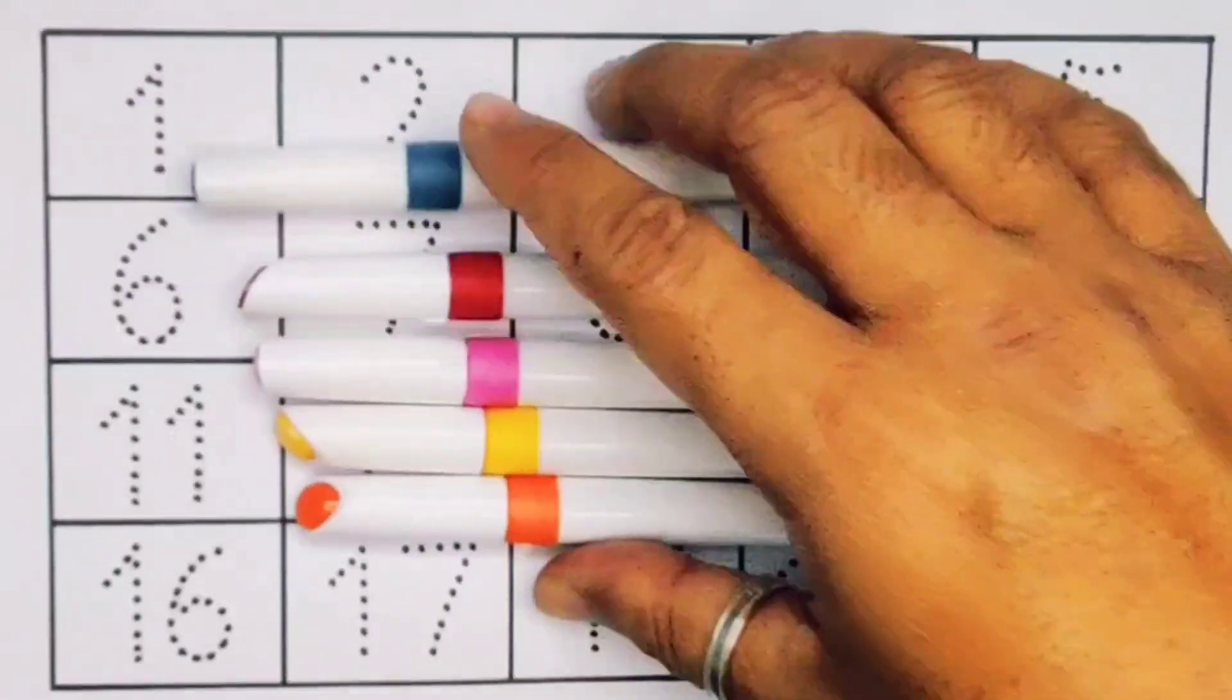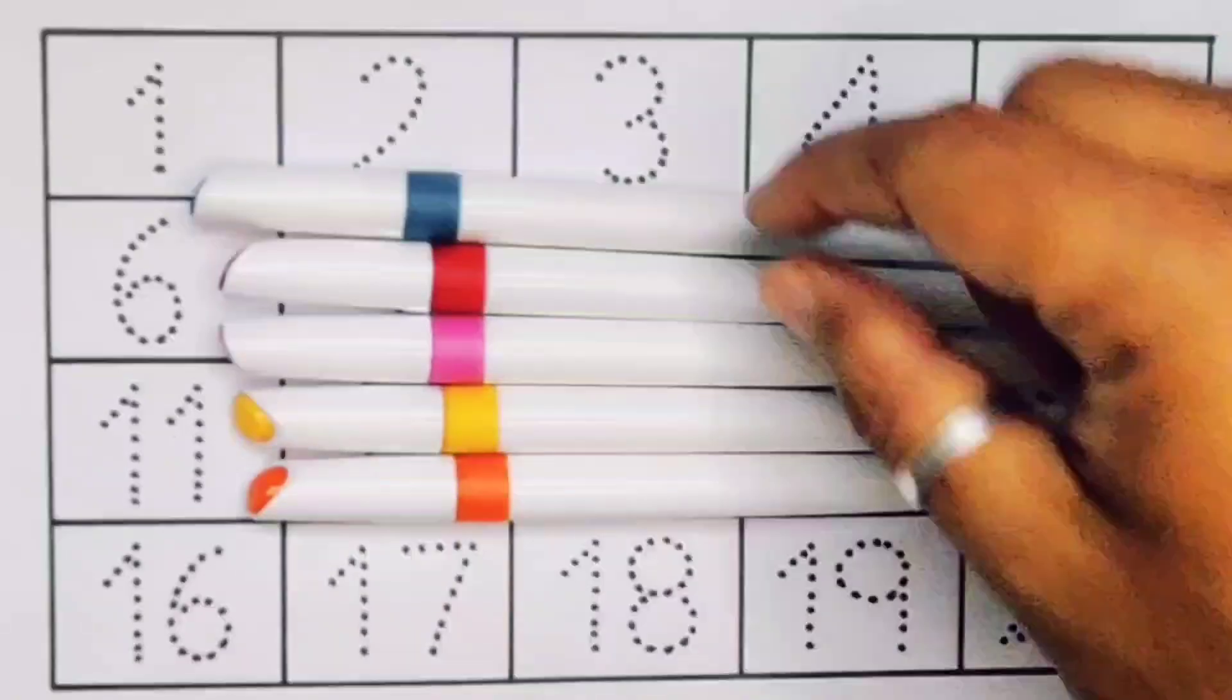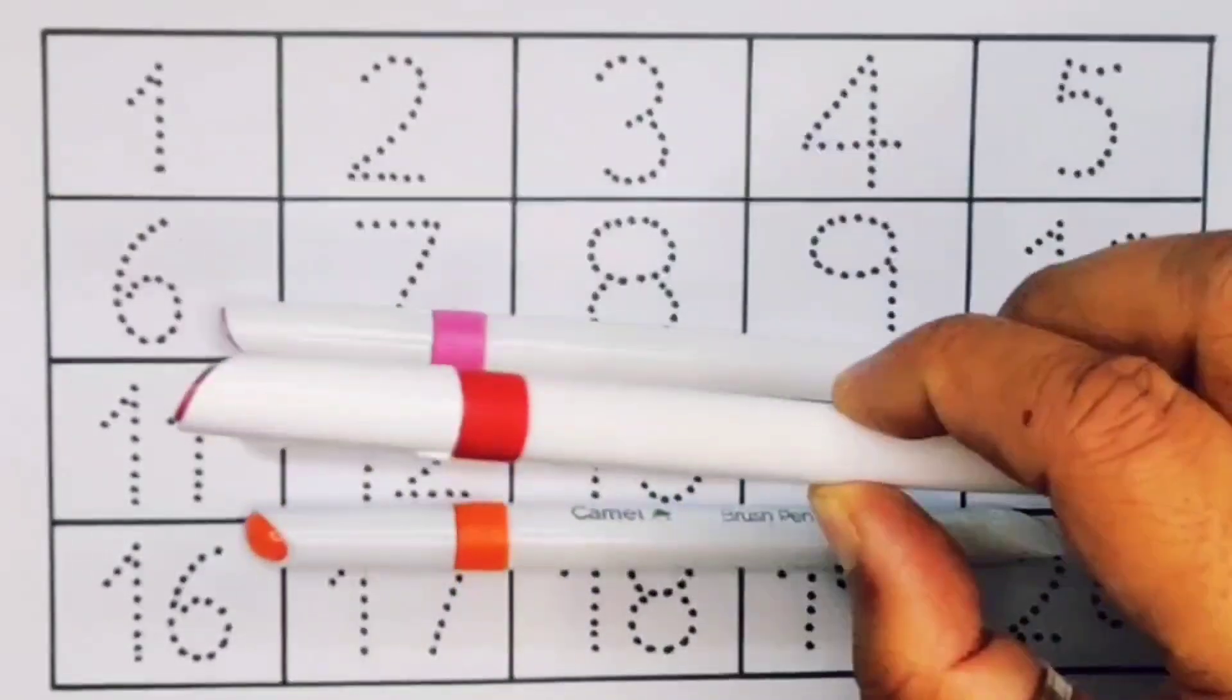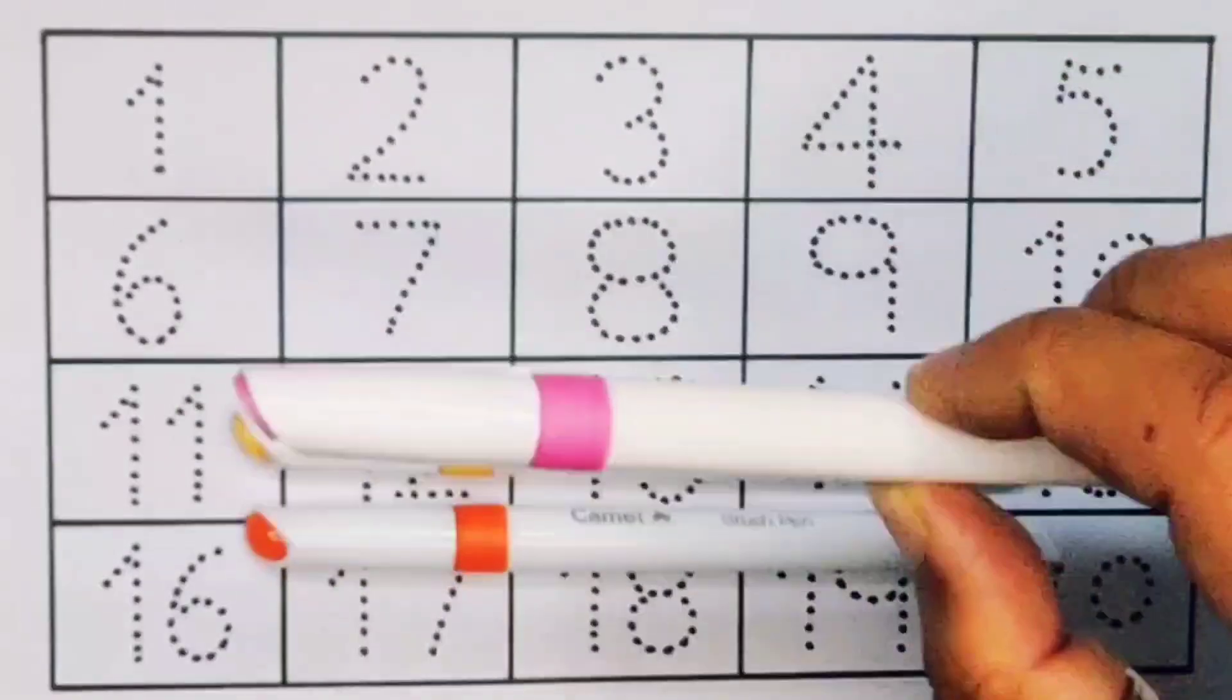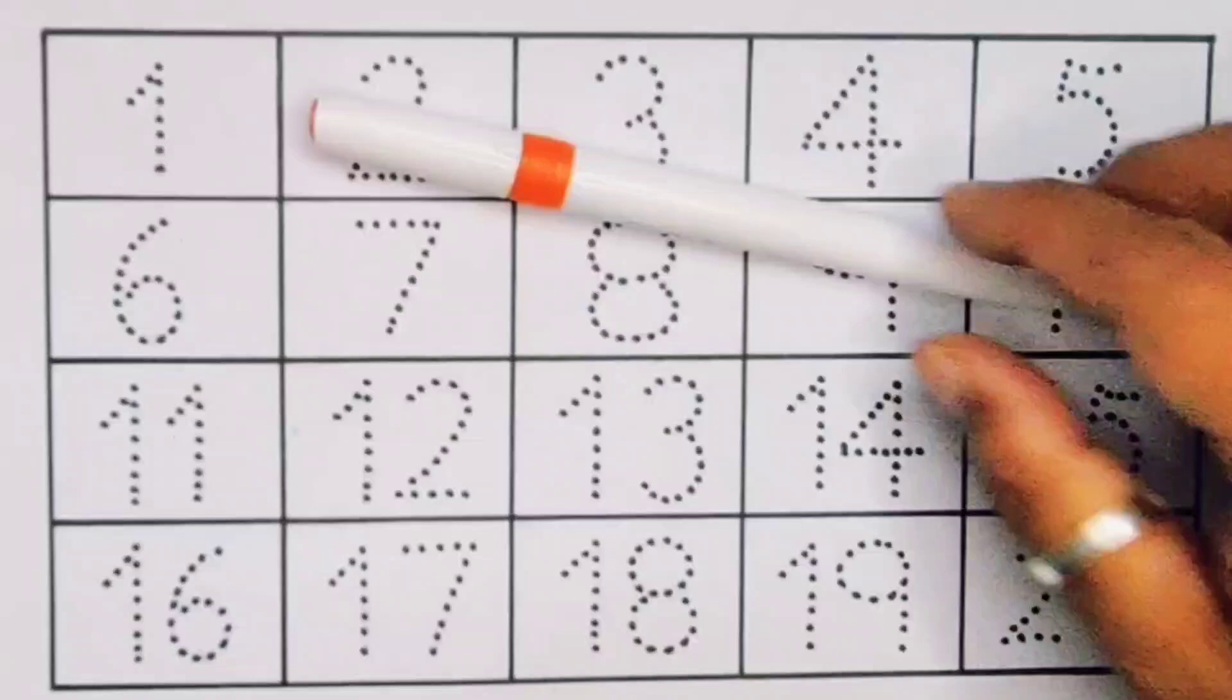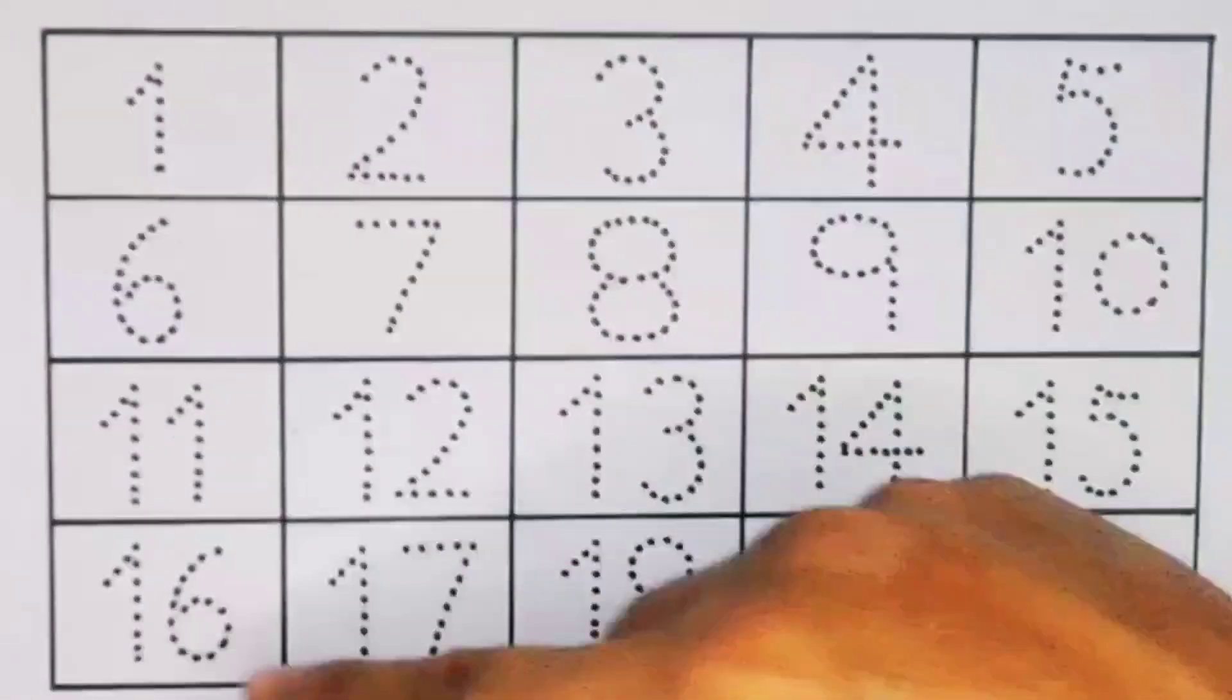Hello kids, welcome to my new video. First we're going to know the colors name: green color, red color, pink color, yellow color, and orange color. Now let's learn the numbers, counting 1 to 20. First, number 1. Next, number 2. Next, number 3.